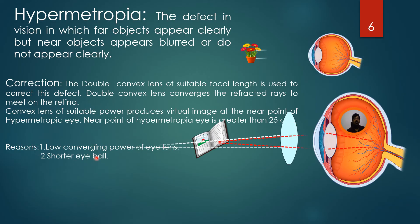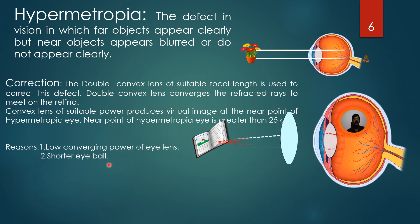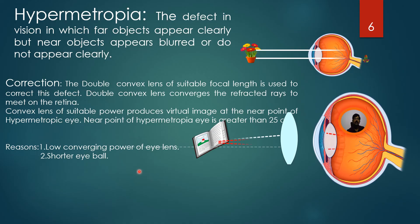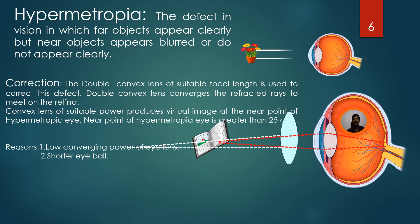The reasons for hypermetropia are: low converging power of the eye lens, and a shorter eyeball. When the eyeball is shorter, the image is also formed behind the retina.